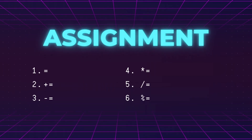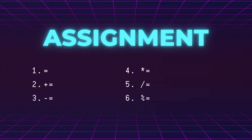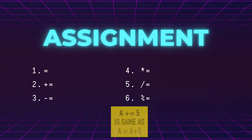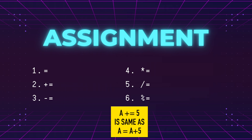Next we have assignment operators. The equal operator assigns the right-hand side value to the left-hand side. All other operators in this category first perform an operation and then assign the value. For example, the statement a += 5 translates to a = a + 5, and it is the same for all other operators in this category.